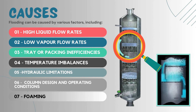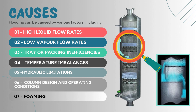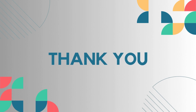That's all for this video where we discussed the factors which cause flooding in a distillation column. The factors discussed were: high liquid flow rates, low vapor flow rates, tray or packing inefficiencies, temperature imbalances, hydraulic limitations, column design and operating conditions, and foaming. In the next upcoming video we will be discussing the consequences of flooding in a distillation column.